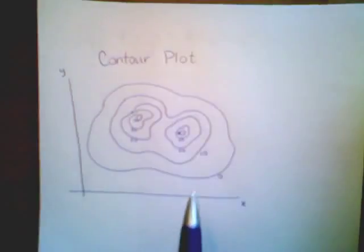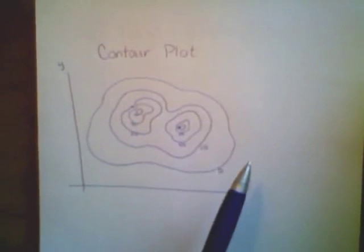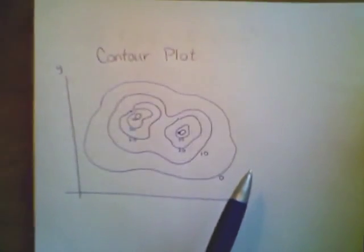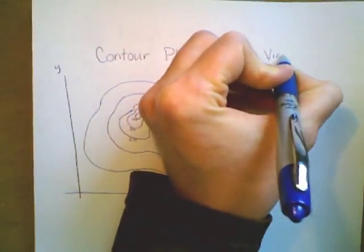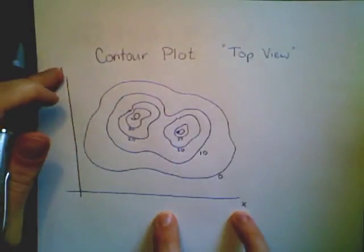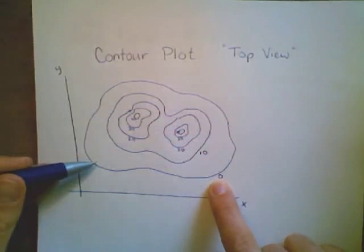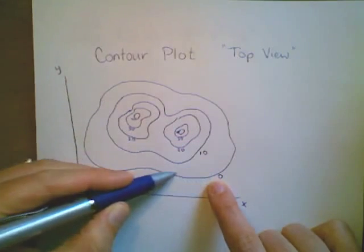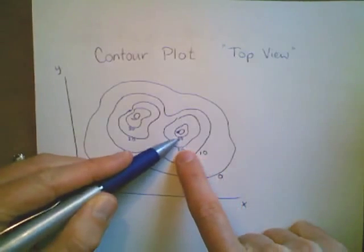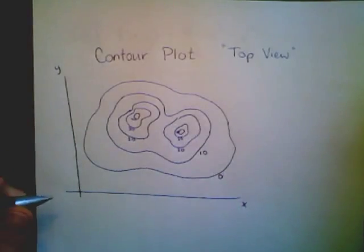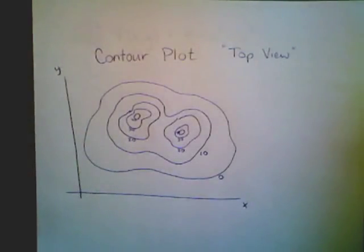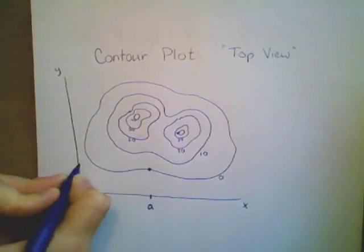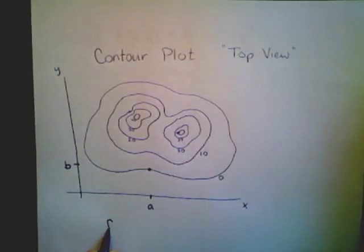Here's another way to visualize this. Instead of looking at a three-dimensional plot, let's look at a contour plot — a top-down view. Suppose I'm looking down at the xy plane, and each of the level curves traces out a different z value. In this case, this level curve is labeled zero, and as I go up each level curve they increase by units of 10. If I want to estimate my partial derivative from the contour plot, say at the point (a, b), I'm asking: what is f sub x of (a, b)?